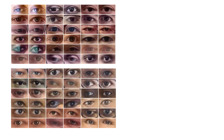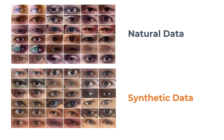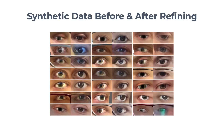To train our model, we used millions of image pairs where a subject looked in two different directions in each pair. We generated a large portion of this data synthetically, using a generative adversarial network to refine the synthetic samples in our dataset. The refined synthetic samples looked virtually indistinguishable from the natural ones. Being able to generate photorealistic synthetic data allowed for generating an immense amount of perfectly labeled data at minimal cost.